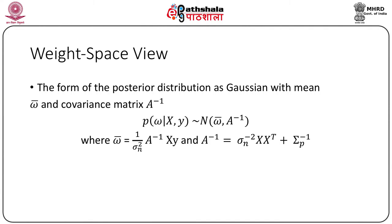To make predictions for a test case we average over all possible parameter values weighted by the posterior probability. Therefore, the predictive distribution for f* = f(x*) is given by averaging the output of all possible linear models with respect to the Gaussian posterior. The mathematical expressions can be found in your notes.